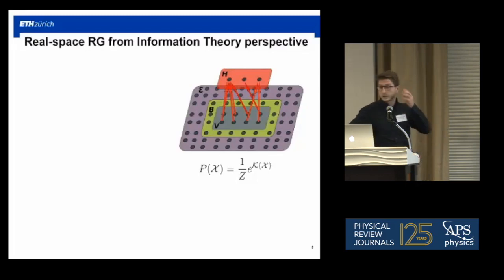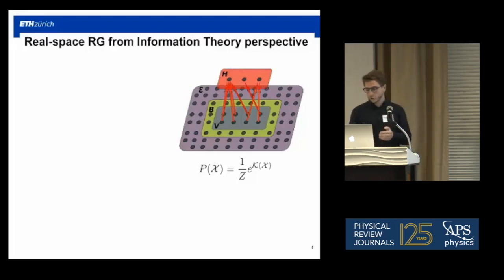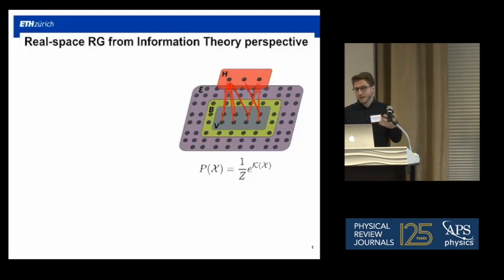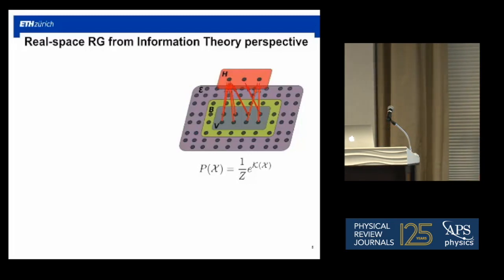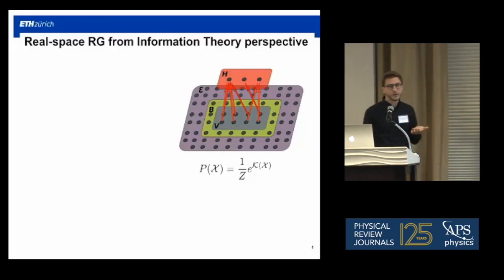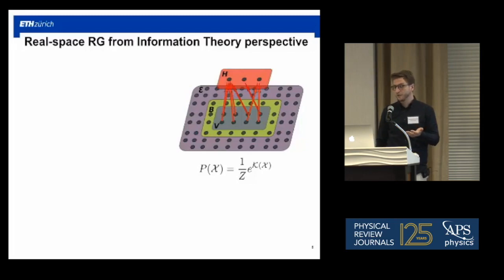In that sense, the relation of RG to information theory is obvious, because this averaging procedure is a form of lossy compression where irrelevant microscopic details are discarded and the information preserved along the flow is the one that ultimately characterizes the fixed point. The question is whether this intuition can be nicely formalized and useful in practice. Concretely, real-space RG proceeds by dividing the system into spatial blocks and constructing a coarse-grained description of each block in terms of new variables. We describe the system by a probability distribution given by some Hamiltonian; a block v is coarse-grained into a smaller set of variables h.